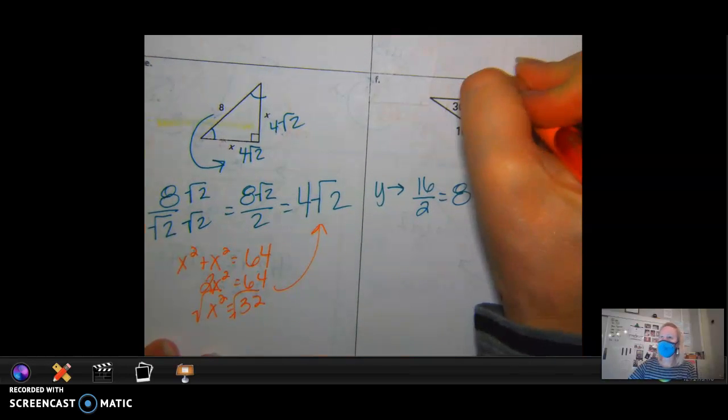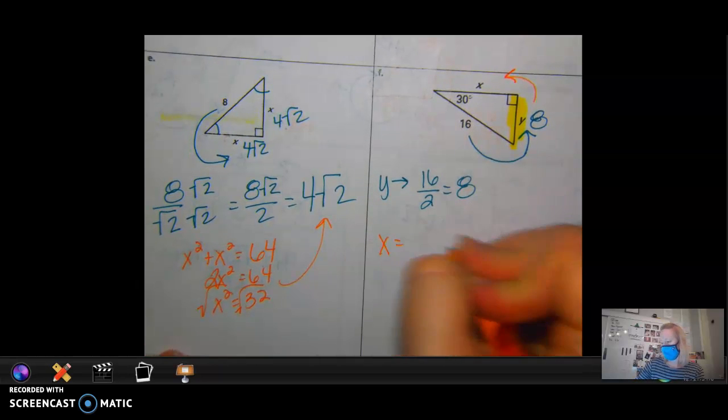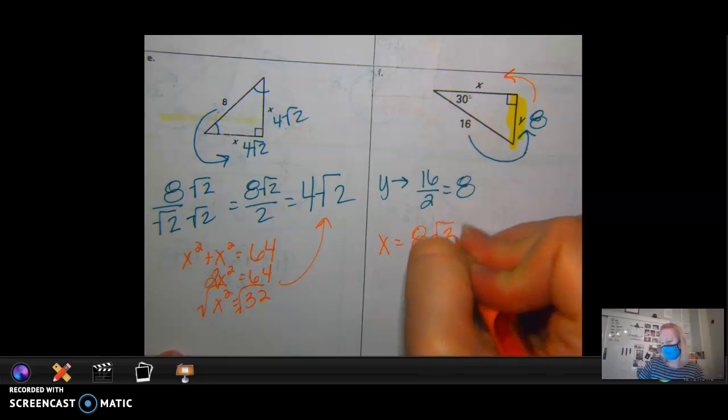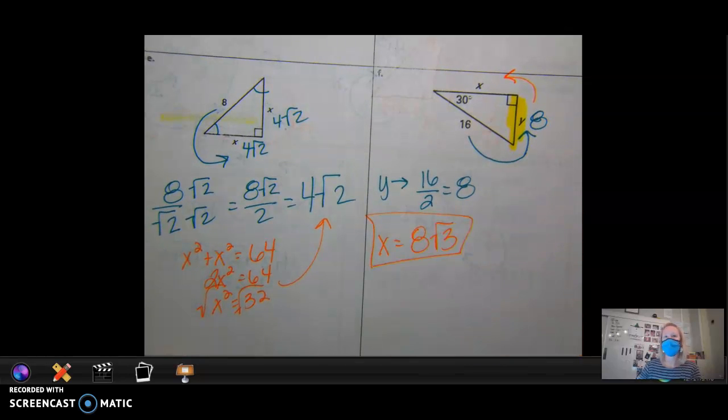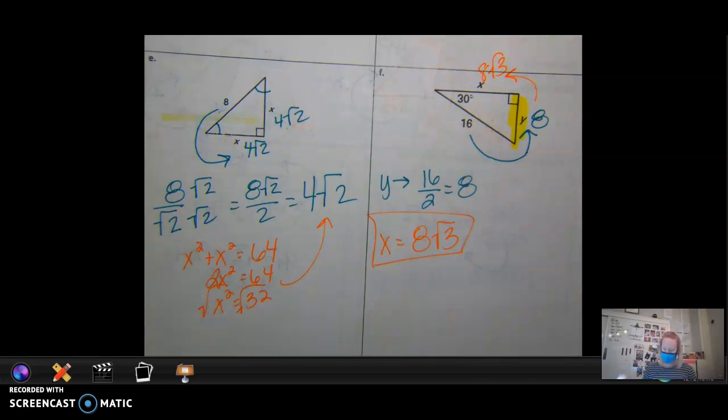And then how do I go from short to medium, then? Yep, so that one's just 8 square roots of 3, right? Perfect, guys. Are we getting it? Are we okay?